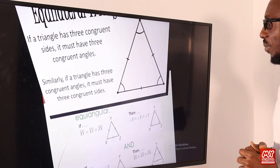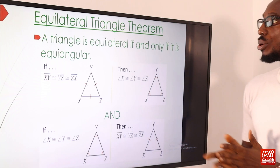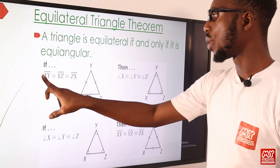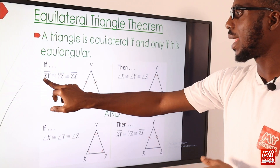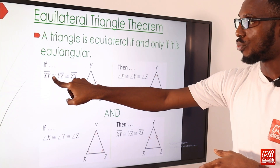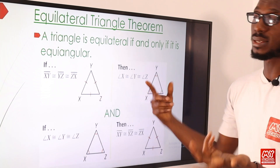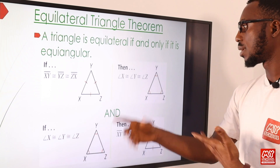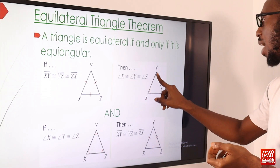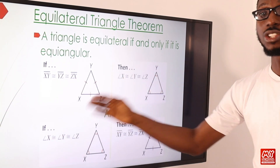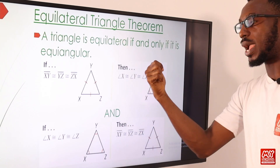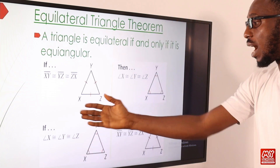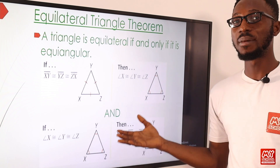A triangle is equilateral if and only if it is equiangular. So if side XY is congruent to YZ and ZX, then angle X is congruent to angle Y, which is congruent to angle Z. If the sides are congruent, then the angles should be congruent, and if the angles are congruent, then the sides should be congruent. That is exactly what the diagrammatic expression shows.